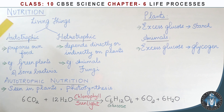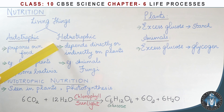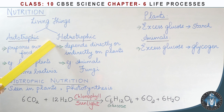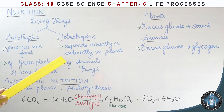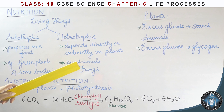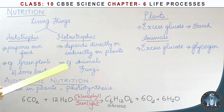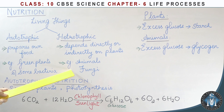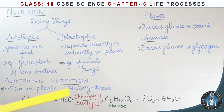For nutrition, there are two types of living things. One is autotrophic and one is heterotrophic. Autotrophic means all living beings that prepare their own food — for example, all green plants and some bacteria. Heterotrophic means organisms that depend directly or indirectly on plants — for example, animals and fungi.